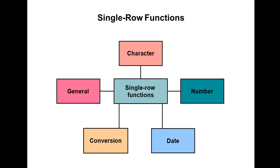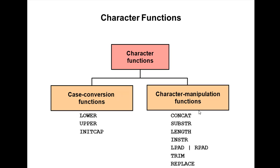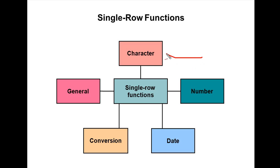Character functions accept character input and can return both character and number values. Number functions accept numeric input and return numeric values. Date functions operate on values of the date data type. Date functions always operate on date data types, and all date functions return a value of date data type — except the MONTHS_BETWEEN function, which returns only a number. These date functions will be explained in the next video tutorial.